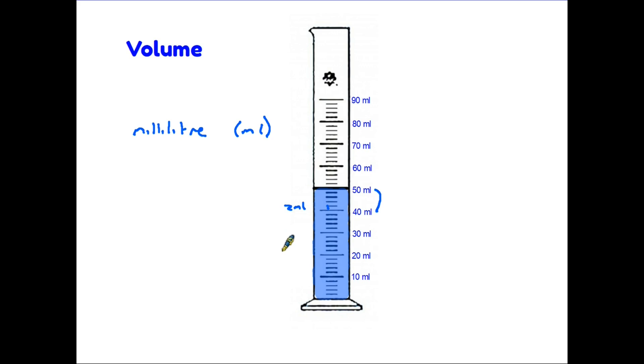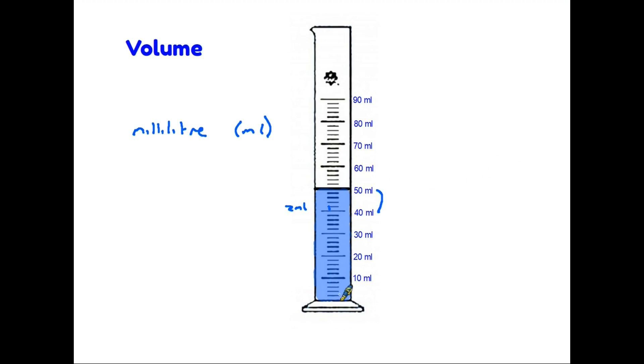And that's something you have to check out for yourself when you first look at a scale. Try to work out exactly what each of the lines is measuring. In this particular case, we can see that the liquid in the container comes up to 50 millilitres, and that's how we would read the scale up the side here.